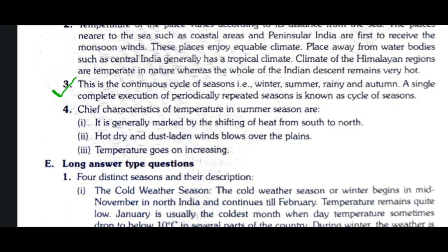Question number three: What is meant by the term cycle of seasons? This is the continuous cycle of seasons — that is winter, summer, rainy and autumn. A single complete exhibition of periodically repeated seasons is known as the cycle of seasons.